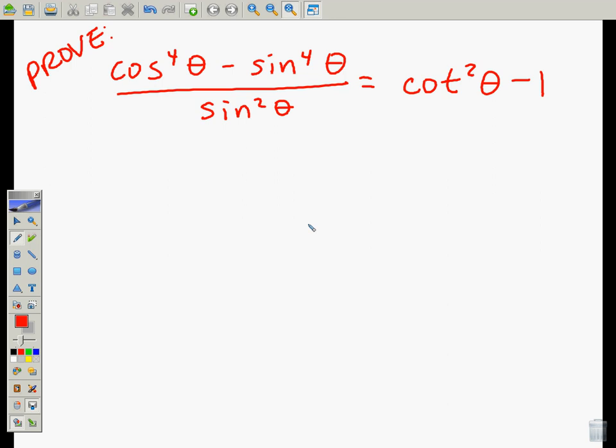Looking at today is more of trig proofs, and they give us a complicated expression where they say cosine to the fourth theta minus sine to the fourth theta over sine squared theta is equal to cotangent squared theta minus one.